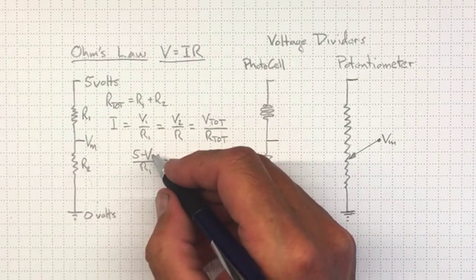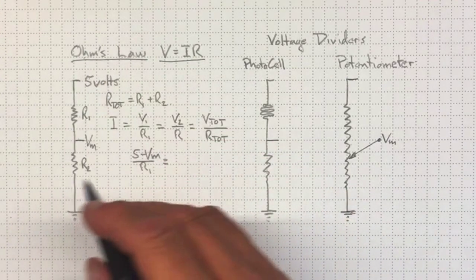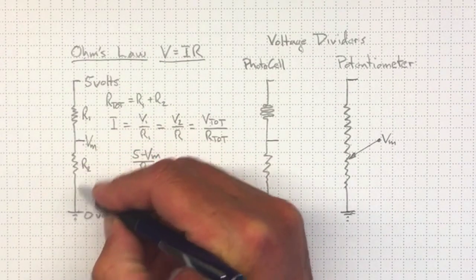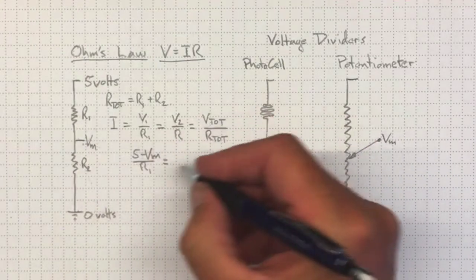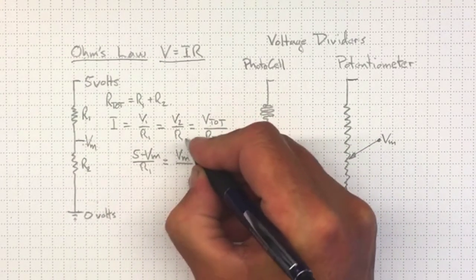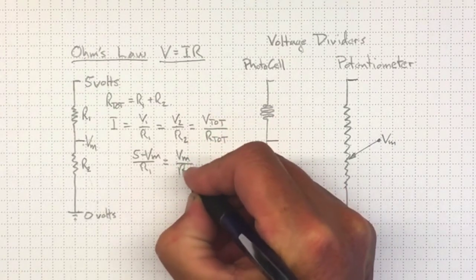Well, VM, the voltage drop across here from VM to zero will be just equal to VM divided by R2.